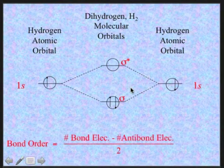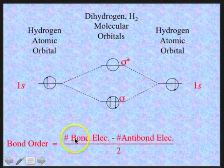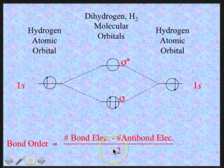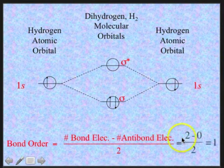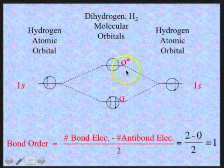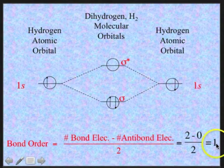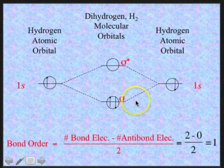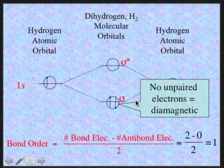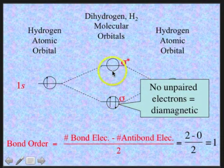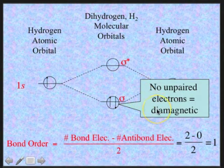Let's figure out the bond order. Bond order is the number of bonding electrons minus the number of anti-bonding electrons, divided by 2. We have two electrons in a bonding orbital, zero in an anti-bonding orbital, divided by 2 — the bond order is 1. So we have one bond between the two hydrogen atoms. As for magnetic properties, both electrons are paired; there are no unpaired electrons. Therefore, the hydrogen molecule is diamagnetic.